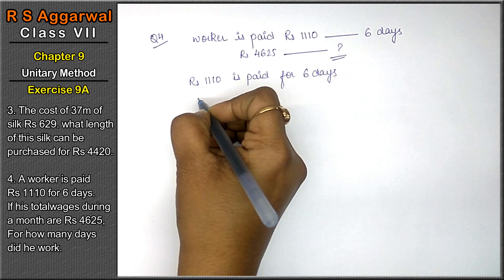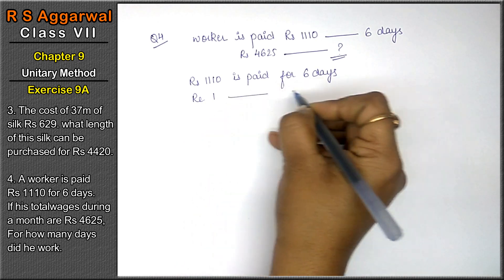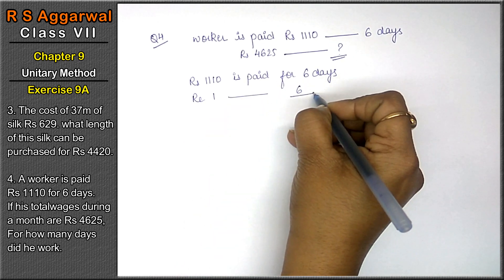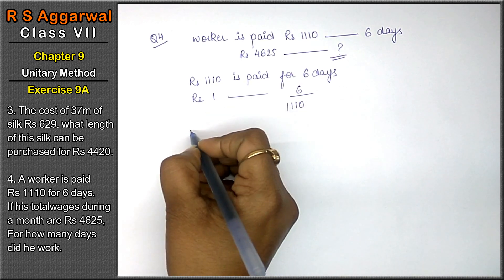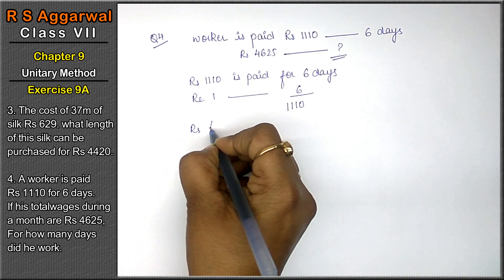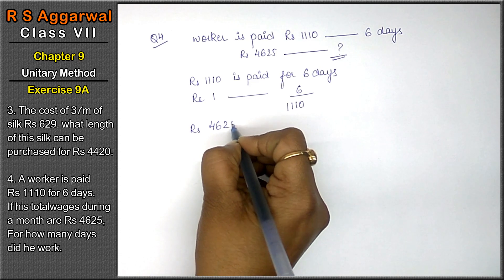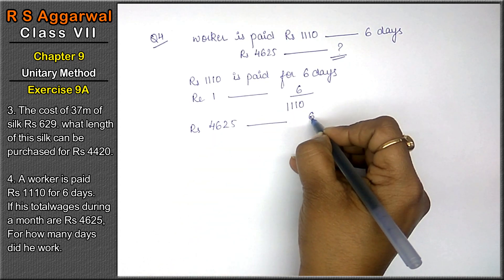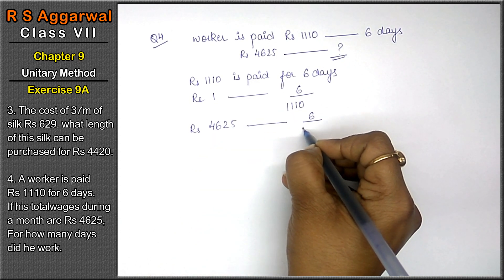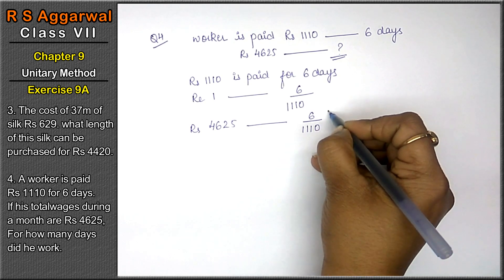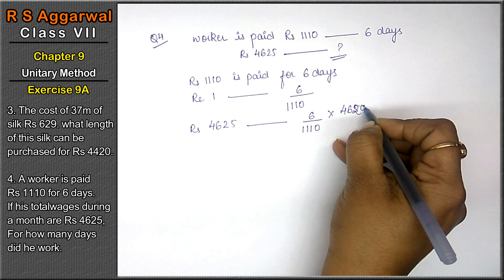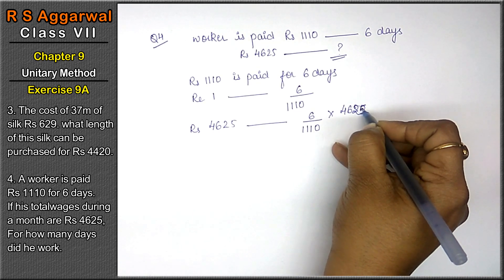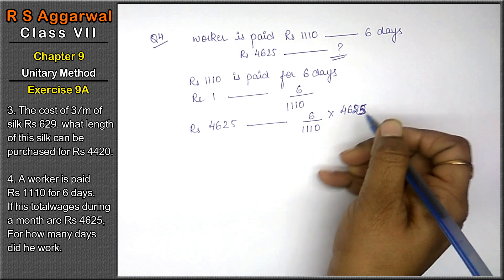Now rupee 1 will be paid for 6 upon 1110. Now अगर rupees 4625 pay किया गया है, तो कितने दिन के लिए pay किया जाएगा? 6 upon 1110 into 4625.